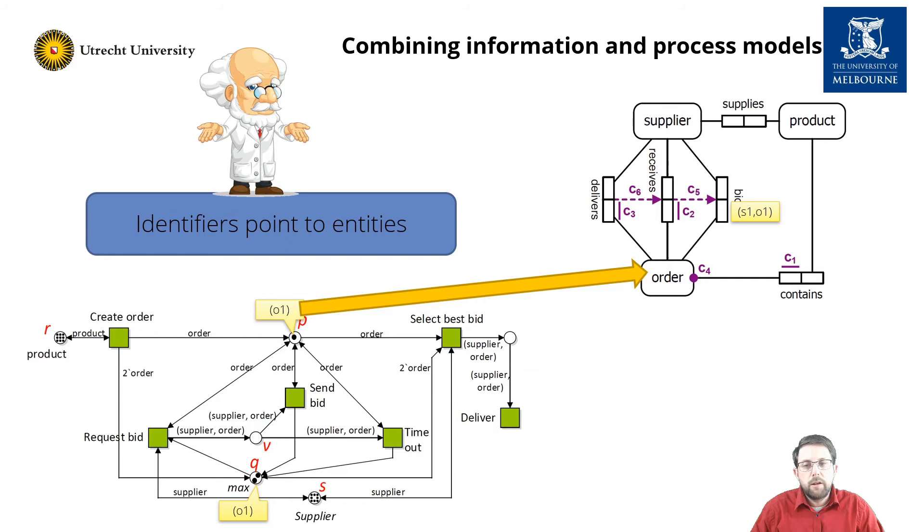This allows us to define the semantics of our information system model. A transition is only enabled if it is enabled with some mode in the current marking of the net, and second, that applying its induced transaction results in a valid population. In other words, the transaction should satisfy all constraints of the information model in order to fire.